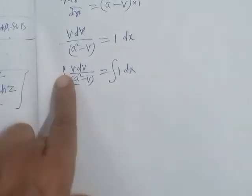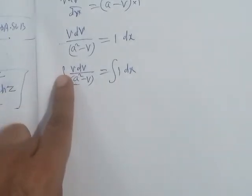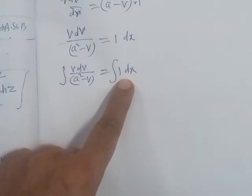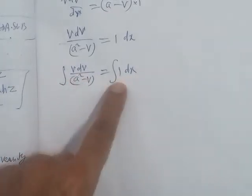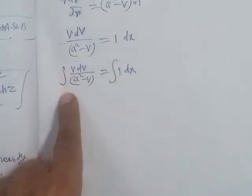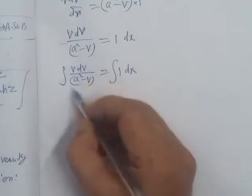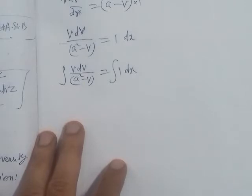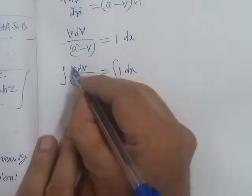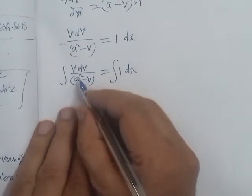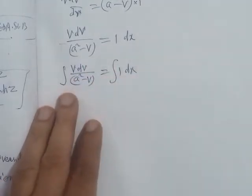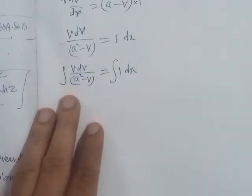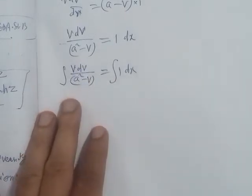Integrating the left hand side with respect to the variable and the right hand side with respect to its variable, we proceed with the integration. When integrating, we divide the numerator and the denominator: the denominator is a square minus v squared.